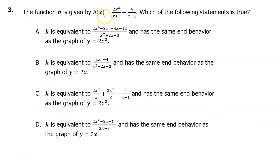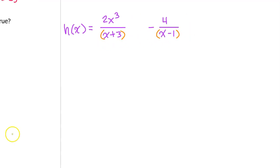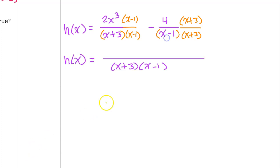Number 3. The function h is given by this expression. Which of the following statements is true? Let's make an equivalent expression for h of x by combining the two separate fractions into one. We multiply the first fraction by x minus 1 over x minus 1, and the other fraction by x plus 3 over x plus 3, so that both denominators match. Now we have like denominators. We make one big fraction and add the numerators — be careful with that minus sign.